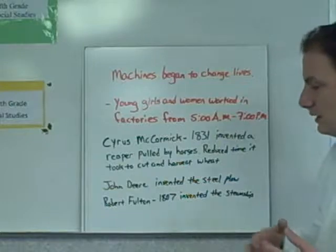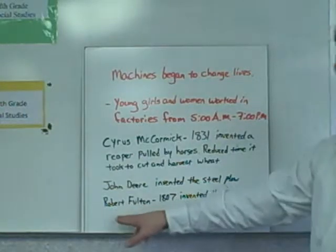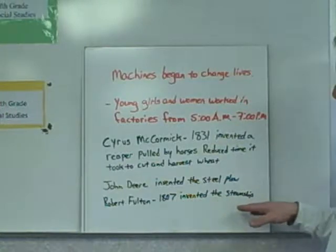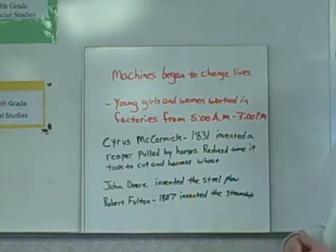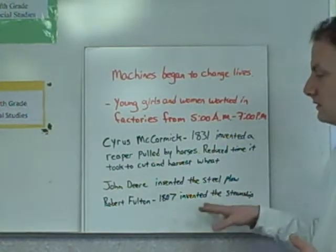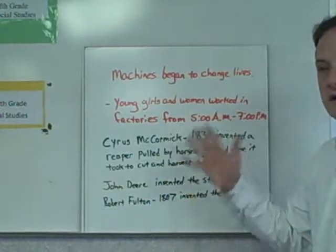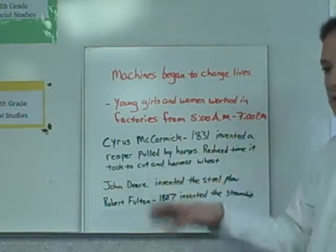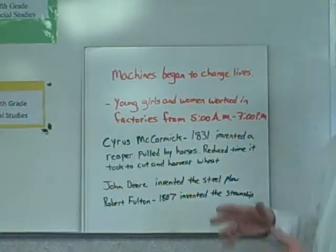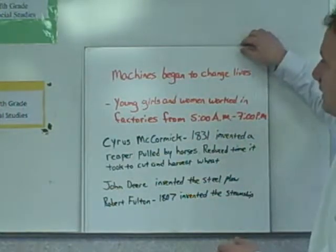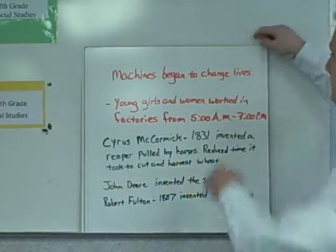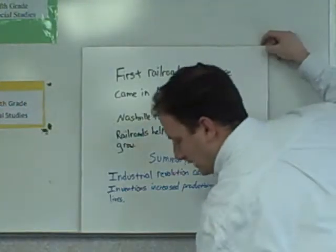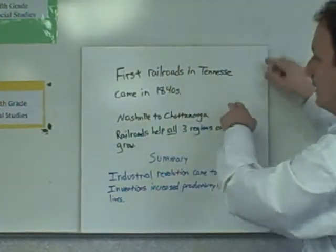Robert Fulton in 1807 invented the steamship. This is going to allow factories to take large supplies and items they produce, put them on ships, and travel up and down rivers to take them to cities that need or will buy their products.